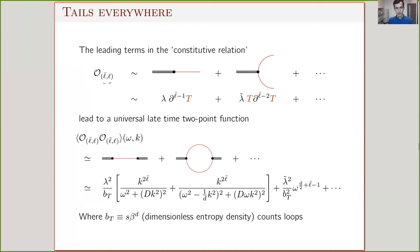This is what the constitutive relation looks like for an operator of spin L with L_bar spatial indices — it comes with coefficients that we don't know and that depend on the specific operator. If you change the operator, it will change these coefficients.